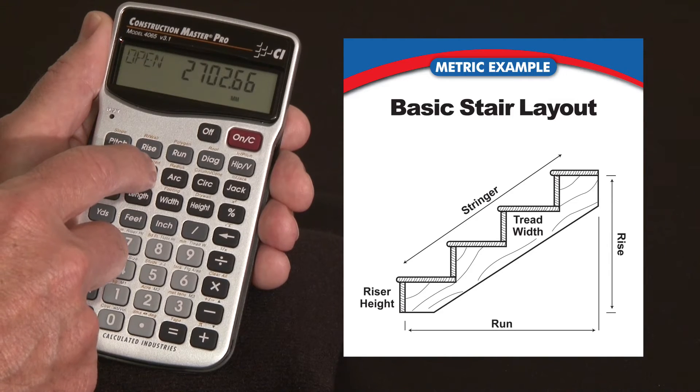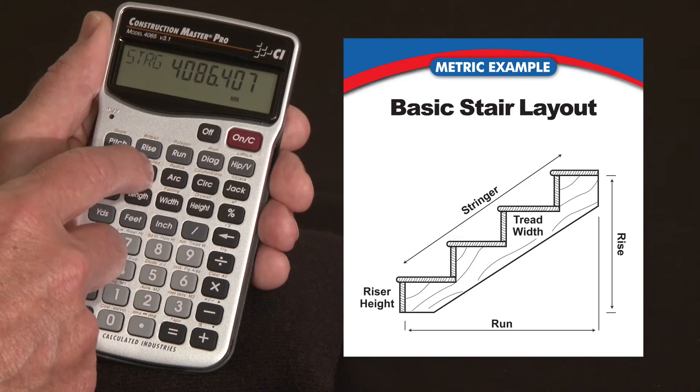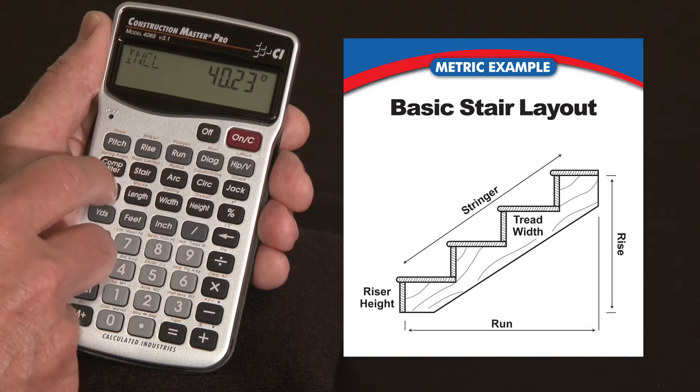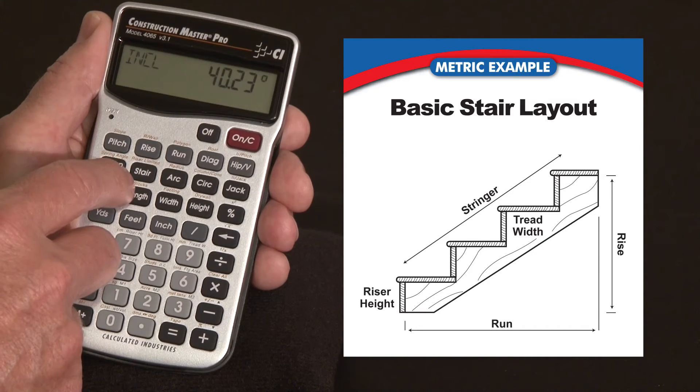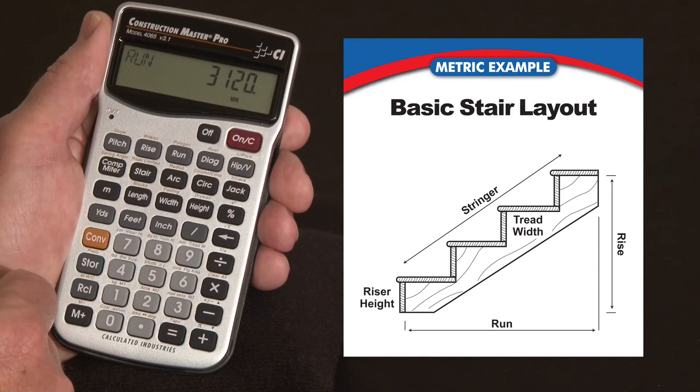The stairwell opening is going to be 2702mm. The stringer length is going to be 4086mm. The angle of incline is 40.23 degrees. One more press will tell me the total run of the stairway, and it comes out to be 3120mm, which is good.